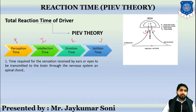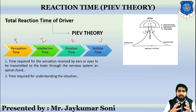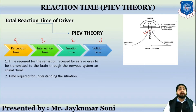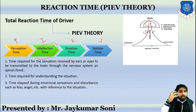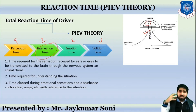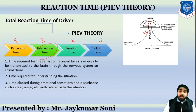Once the signals are received by the brain, the brain will try to understand the situation: what kind of critical situation is there, what can be done, what should be avoided, what reaction to take. The time required for understanding the situation is called intellectual time — where your intellect works. Once understanding is done, certain emotions will be reflected such as anger, fear, and anxiety. The time referring to this emotional response is called emotional time.